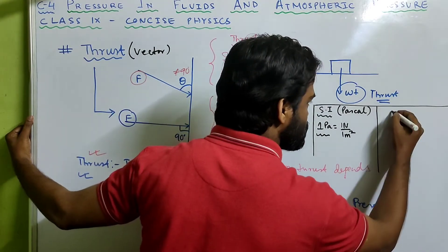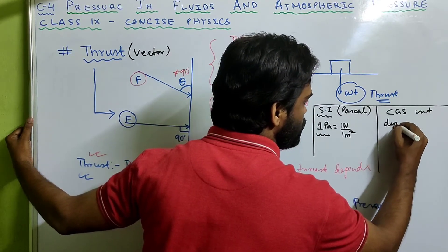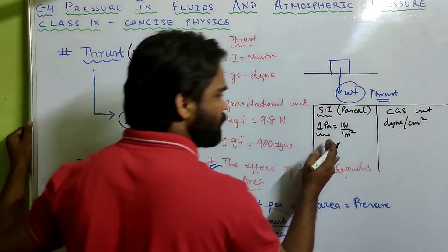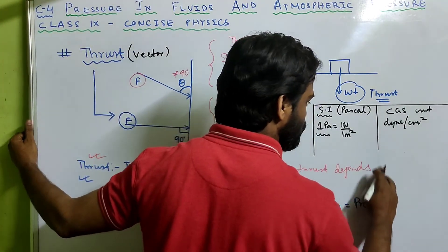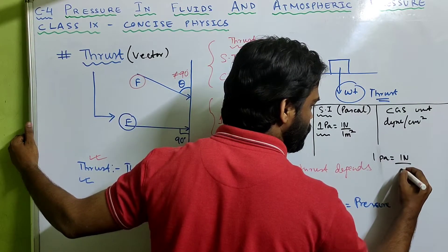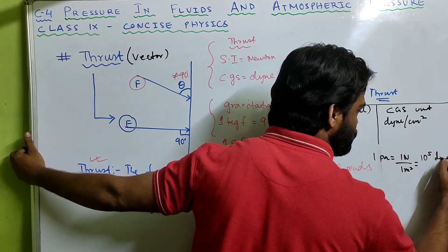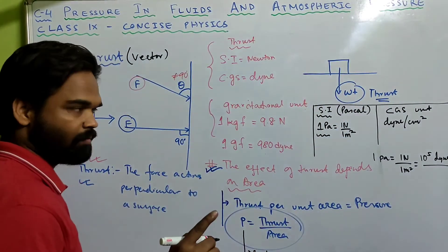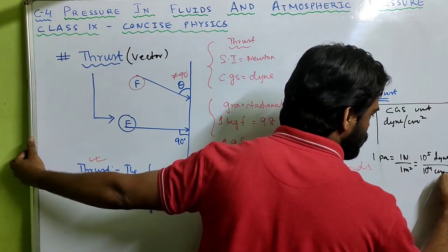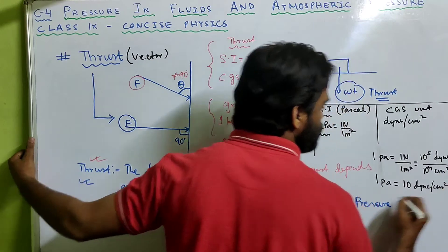The CGS unit of pressure is dyne per centimeter square. There is a relation between 1 Pascal and dyne per centimeter square: 1 Pascal equals 1 Newton per meter square. Since 1 Newton equals 10⁵ dyne and 1 meter square equals 10⁴ centimeter square, therefore 1 Pascal equals 10 dyne per centimeter square.